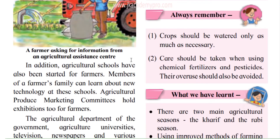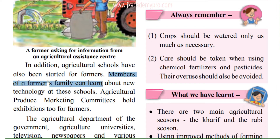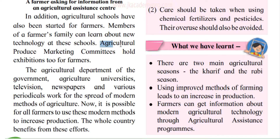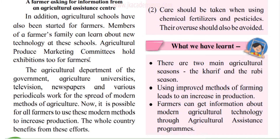There are centers in every village so farmers get all the assistance they need. In addition, agricultural schools have also been started for farmers where they can gain knowledge about how to grow crops, different methods of growing crops, what tractors and machinery to use, and how much water each crop requires. Not only the farmer but also members of the farmer's family can learn about new technology at these schools. Agricultural produce marketing committees also hold exhibitions for farmers so that they can display their products, find buyers, and get a better price.